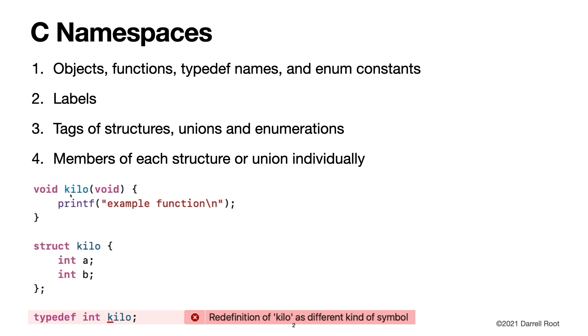Here's an example where we create a function called kilo, and we can still create a struct with a struct tag of kilo with the same name, because they are in different namespaces. But if we try to create a typedef named kilo, that fails because the typedef name is in the same namespace as the function name, which we already had.